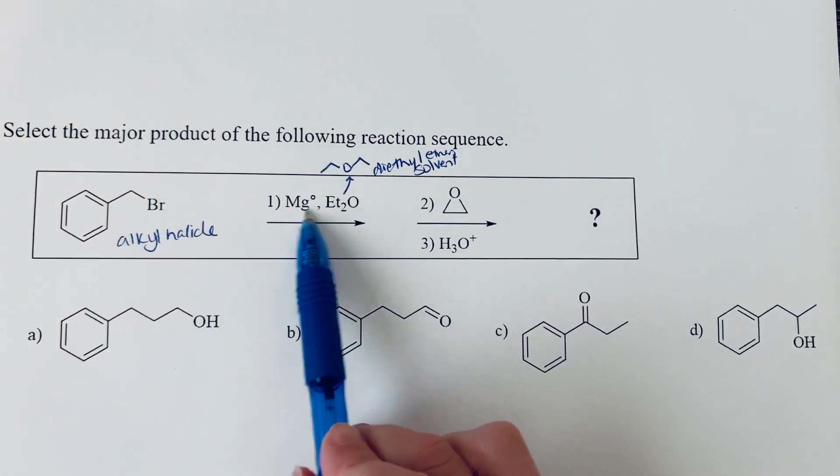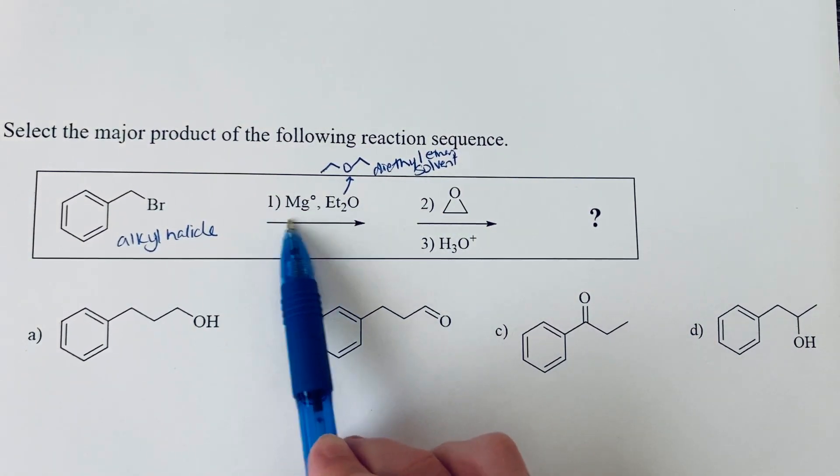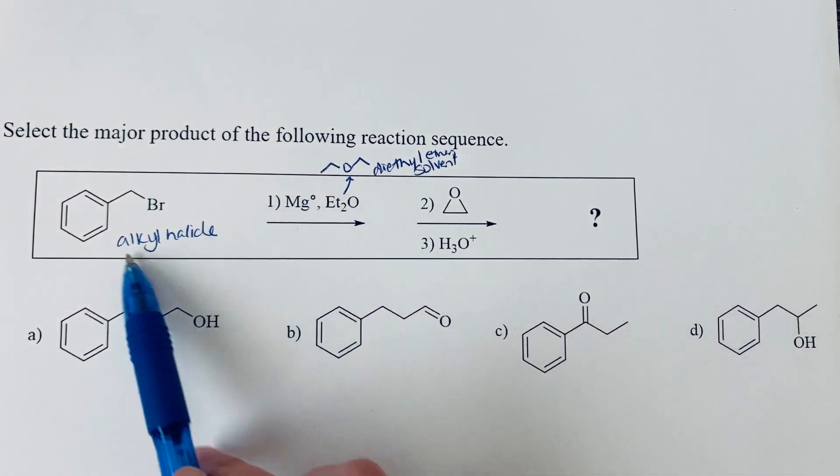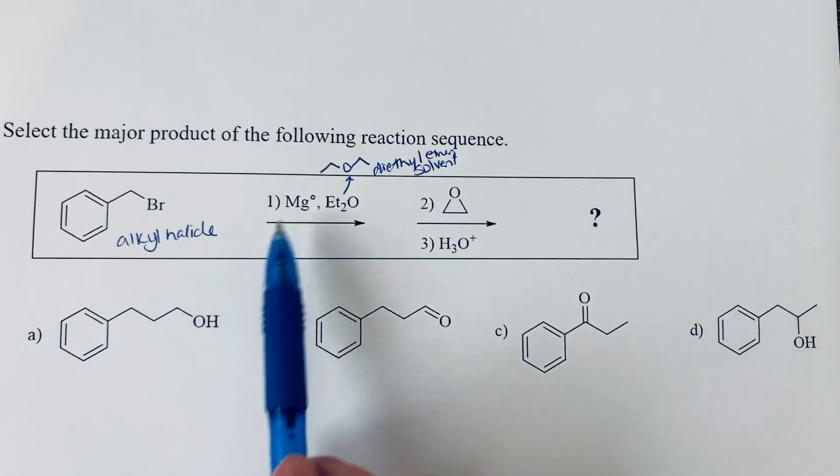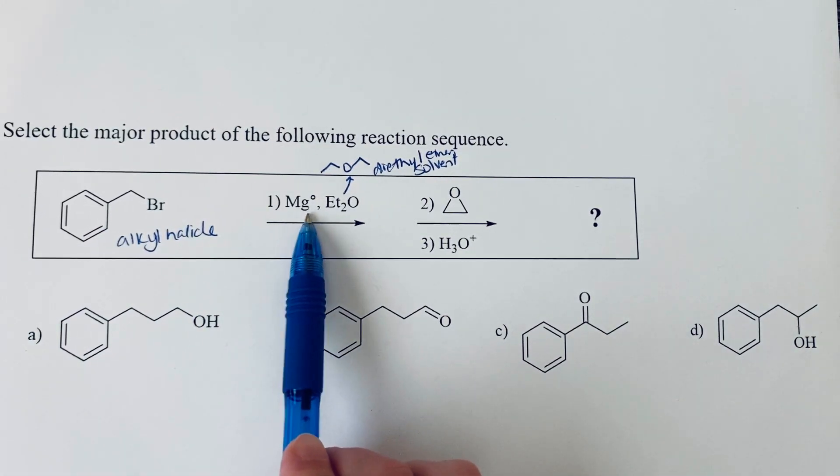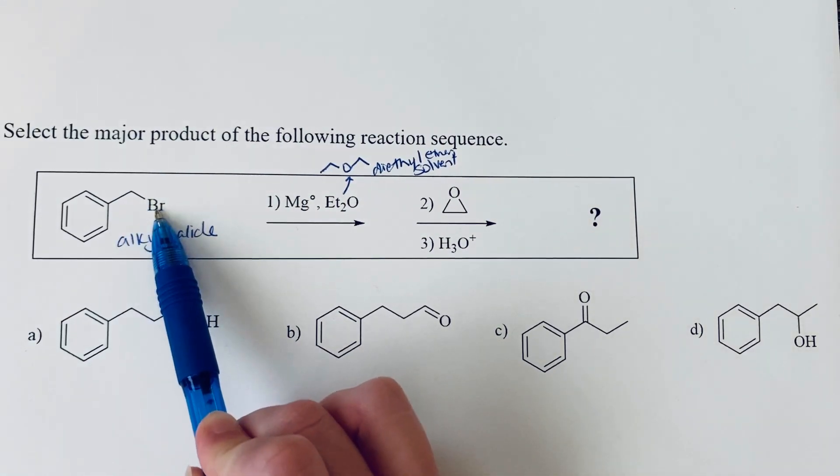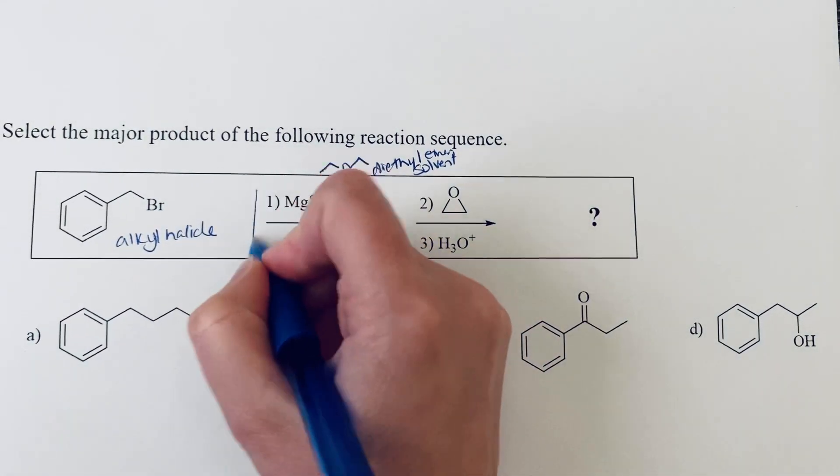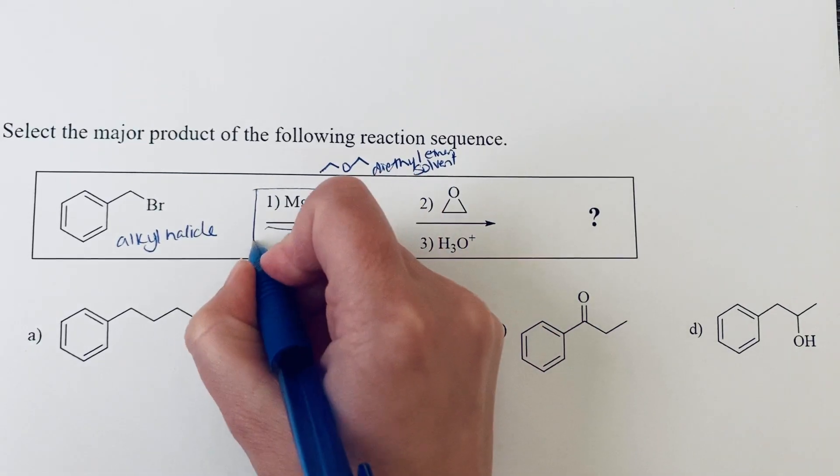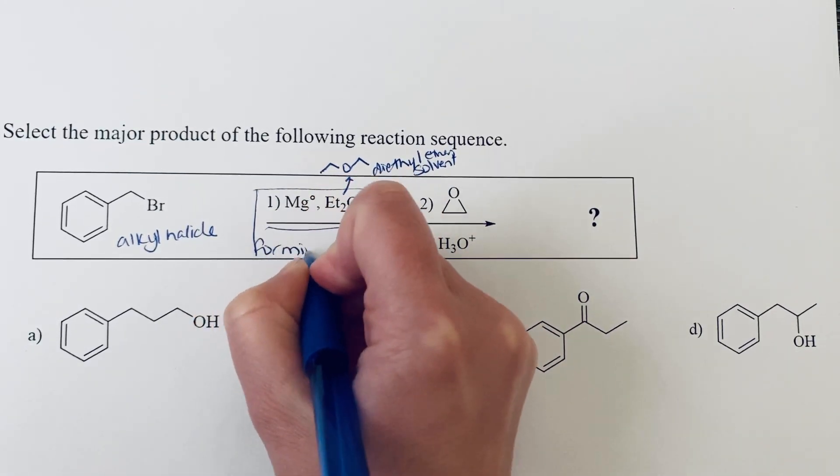So what's really doing the work here is the magnesium. What happens when you put magnesium metal with an alkyl or aryl halide is it actually dissolves and it inserts between the carbon-halogen bond. So the conditions for this first step, what we're doing is we're forming something known as a Grignard reagent.